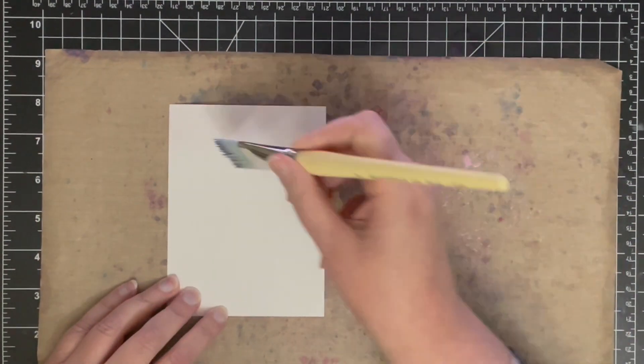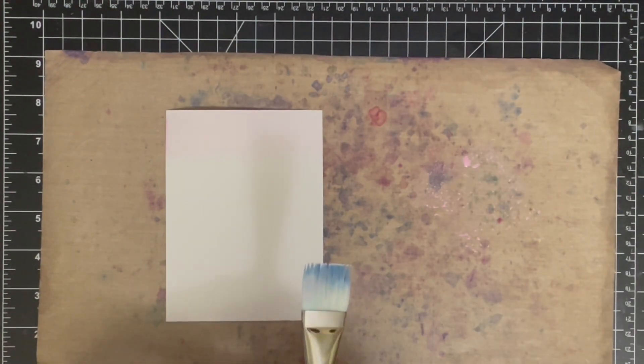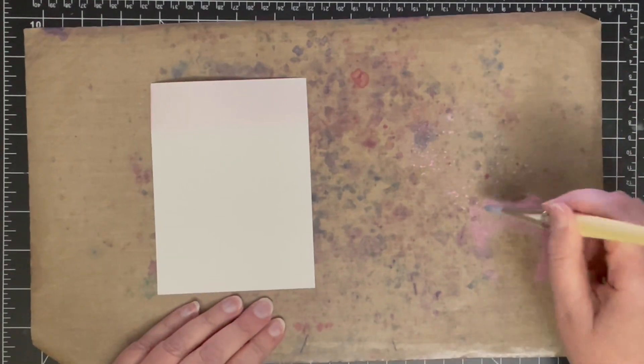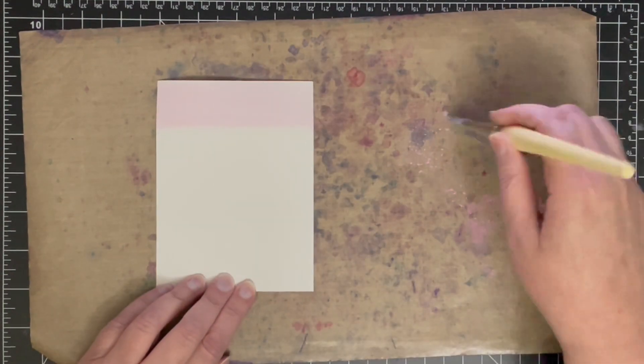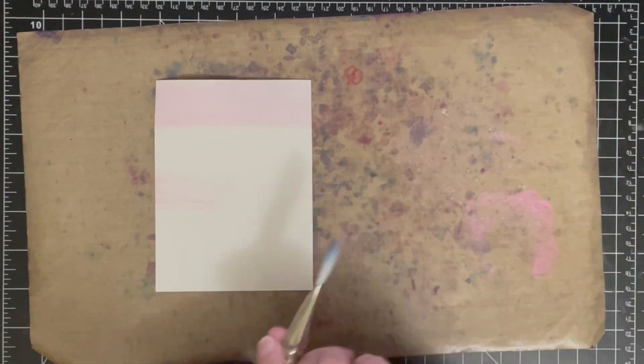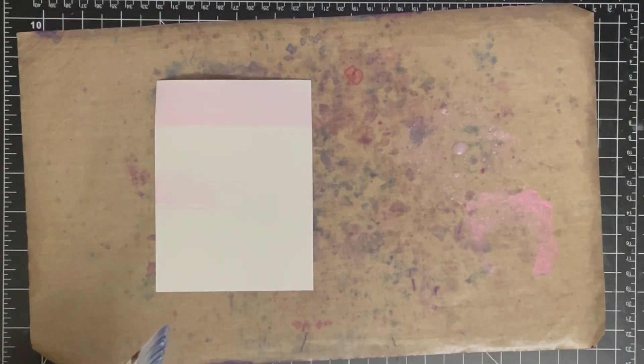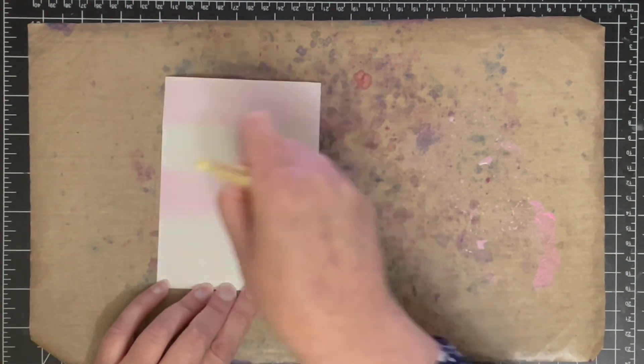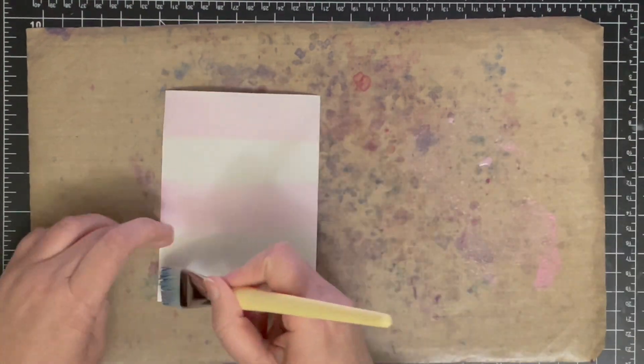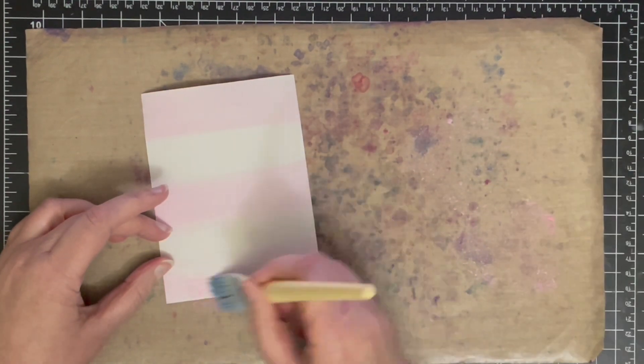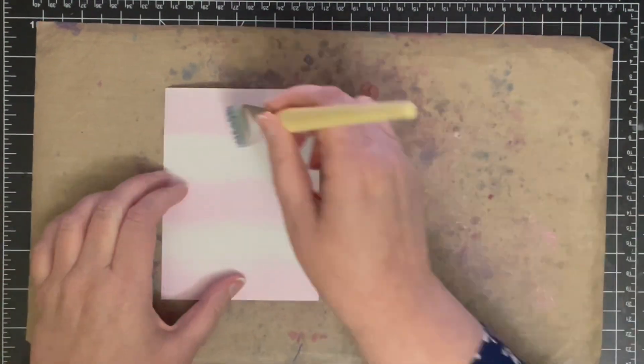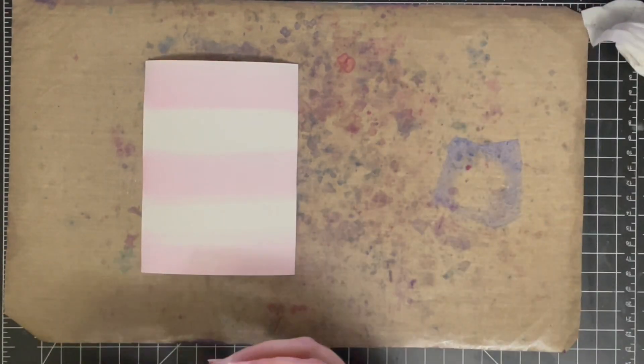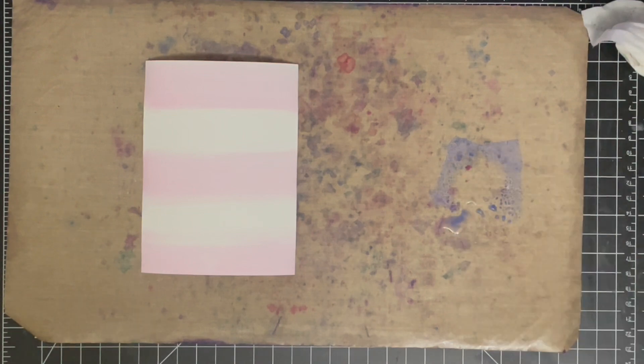I started with some Kitsch Flamingo ink, which is a really pretty pink color, and I want to get some texture with these colors. I don't just want a whole lot of water with paint and a nice smooth application, I want to actually see some brush strokes. I am trying to be a little bit dry, I want there to be enough water so that it is really pale but I want it to be dry enough so I do get a little bit of texture from the brush strokes.